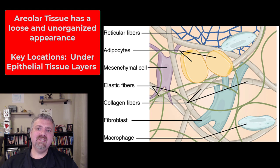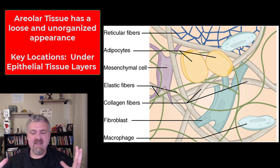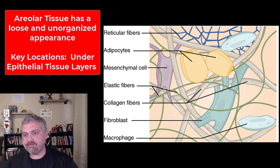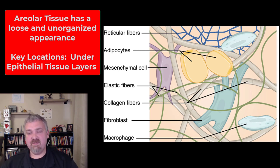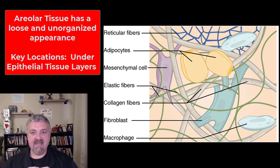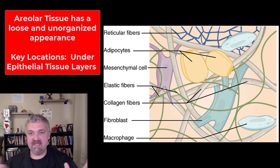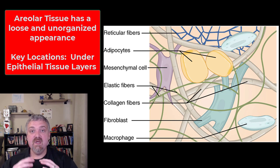The last type is areolar tissue. This is really non-specialized — just a generic-looking connective tissue, and it's usually the generic picture used when looking at connective tissues in general. It's very loose. The key example for areolar tissue, which basically means loose, is that it underlies and attaches to epithelial tissue. When we talk about membranes, they are epithelial tissue plus the connective tissue they're attached to — and most of those are areolar tissue.